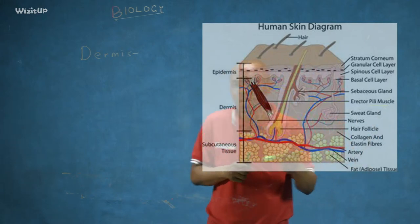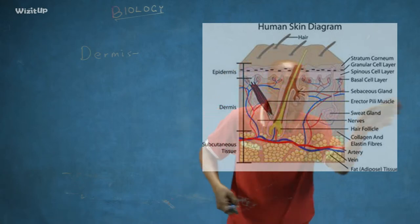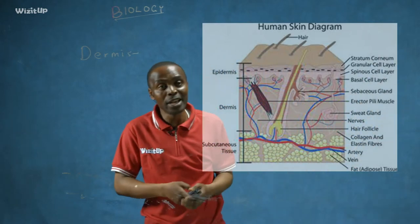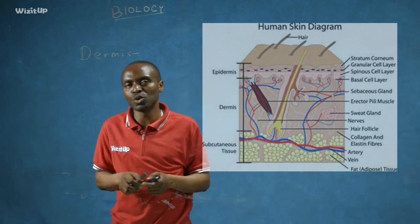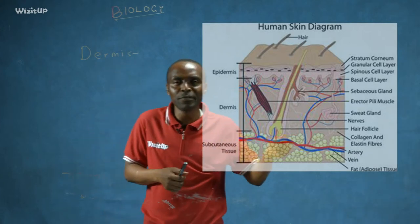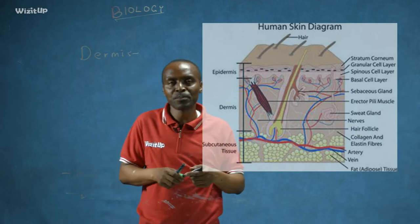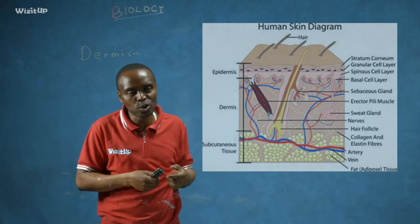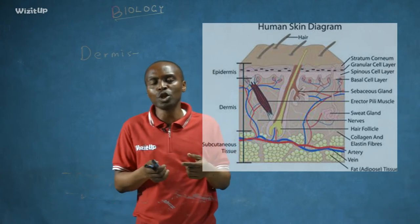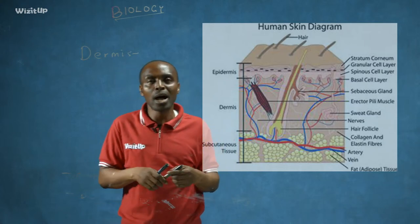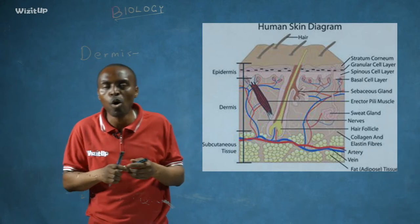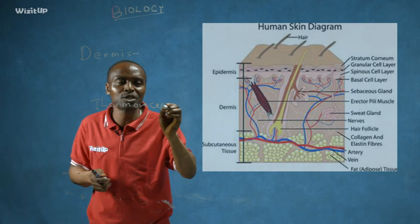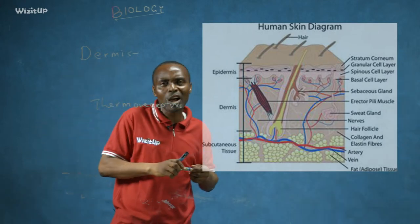There are also nerves in the skin, which are very sensitive. They enable the mammal to receive stimulation and react to its environment — to stimuli. There are different types of nerve cells in the skin: some are sensitive to touch and are called mechanoreceptors; some are sensitive to chemicals and are called chemoreceptors; and some are sensitive to cold and heat and are called thermoreceptors.